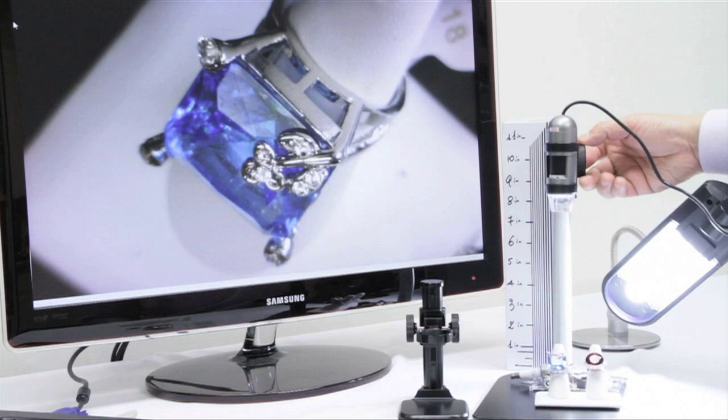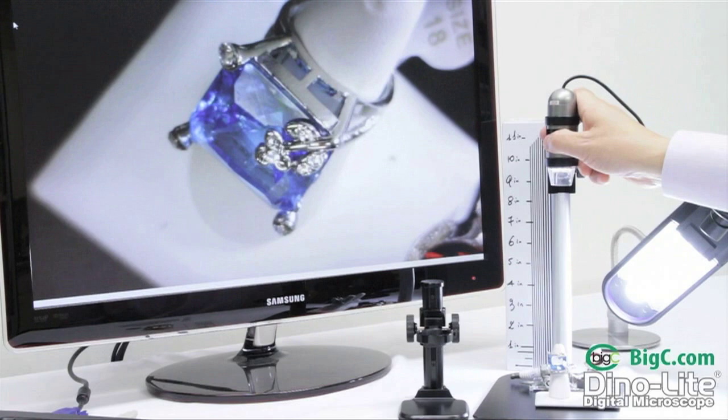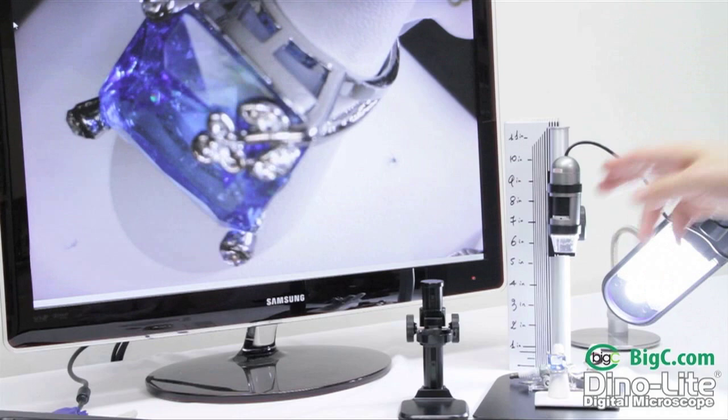As we're demonstrating here, we can move the microscope back a little bit and get 10 times magnification into focus. Then if we want to zoom in, we move the microscope down towards the object we're looking at and refocus the image.